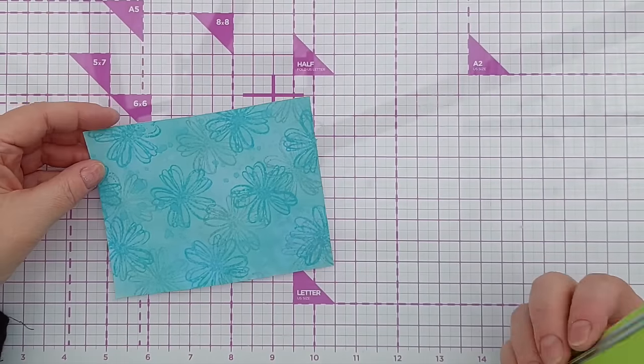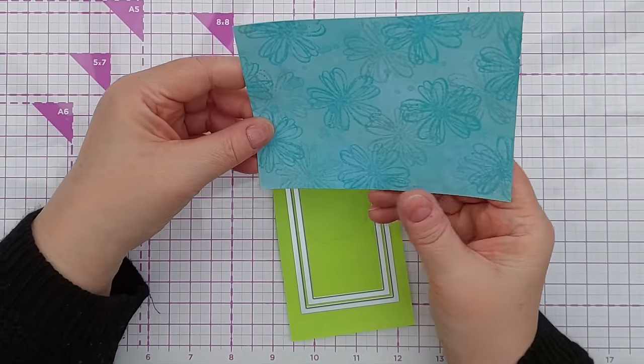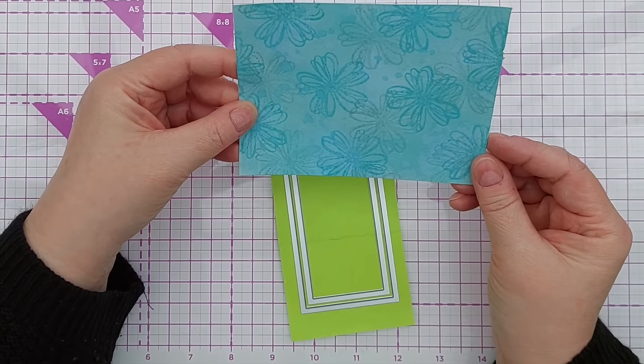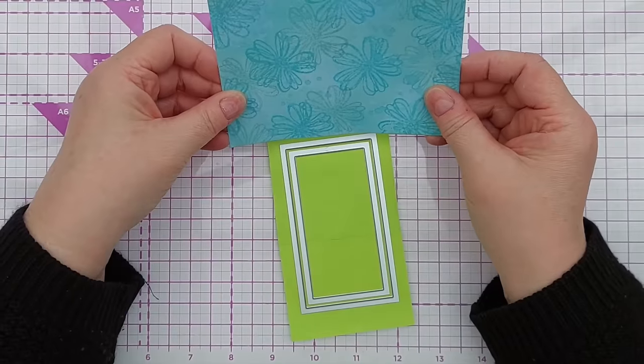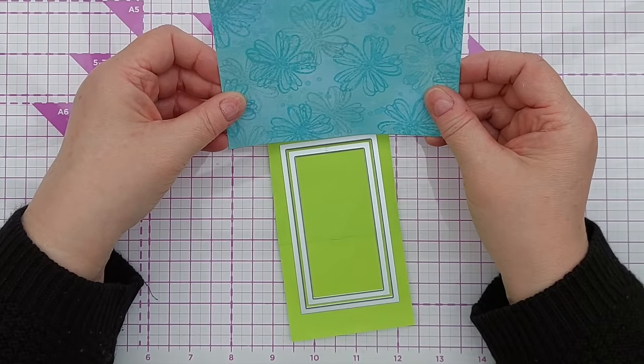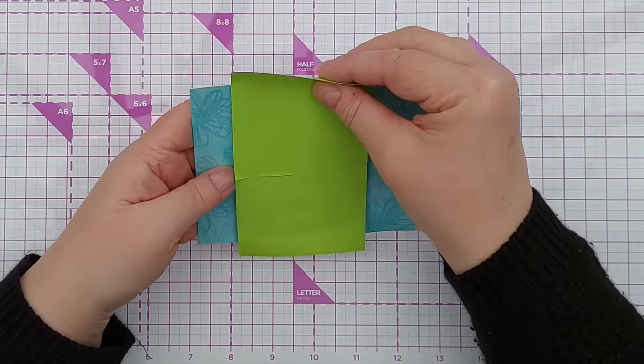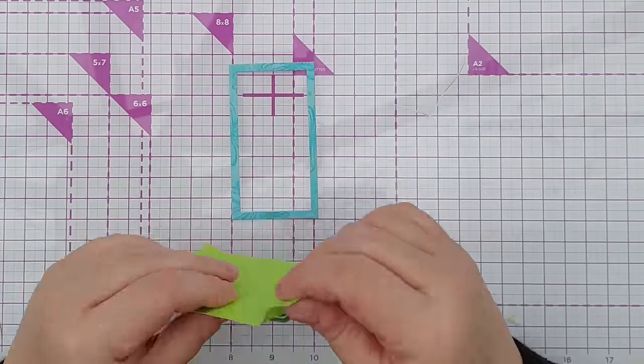Now I need to select which piece of this I want to show through my aperture. I think somewhere around the middle there.